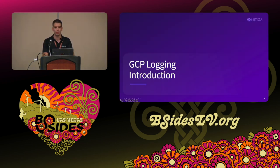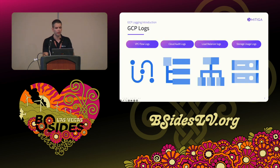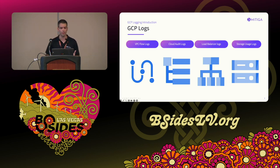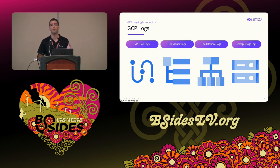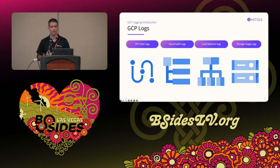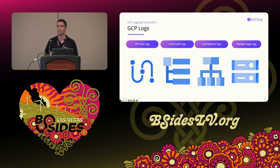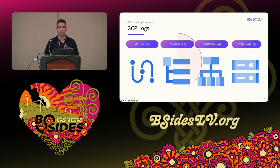Let's talk about GCP logging, which is very important for this case. GCP provides four types of logs helpful for investigation: VPC flow logs give metadata about connections in your environment, similar to VPC flow logs in AWS. Cloud audit logs give information about API actions. Load balancer logs provide metadata about HTTP and HTTPS connections. Storage usage logs are like S3 access logs in AWS, giving information about activity inside your buckets. Today we'll focus on cloud audit logs, which is the most important for detection.